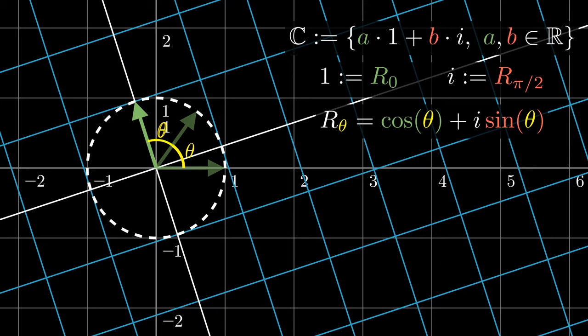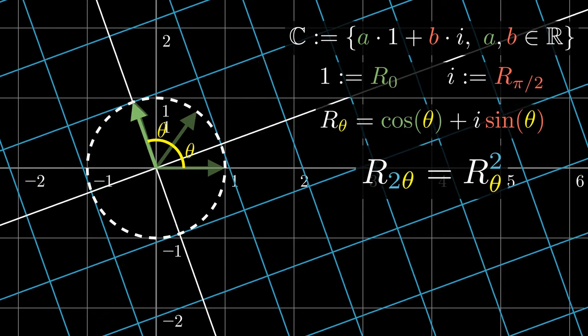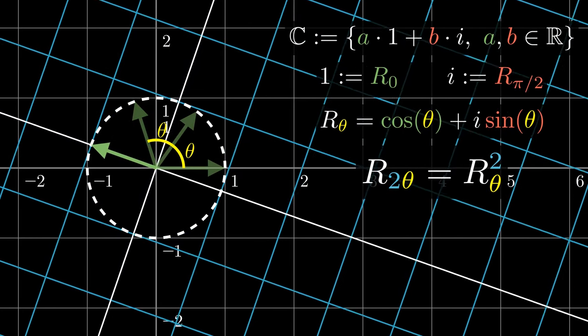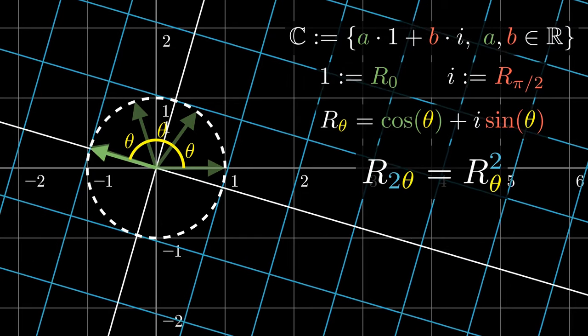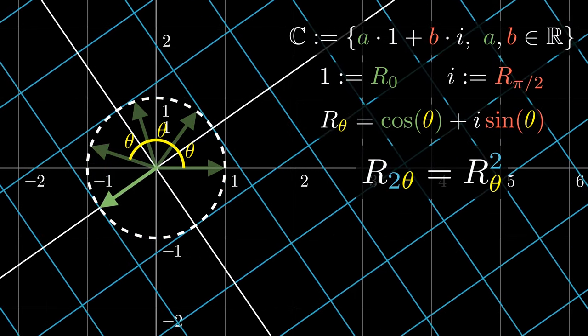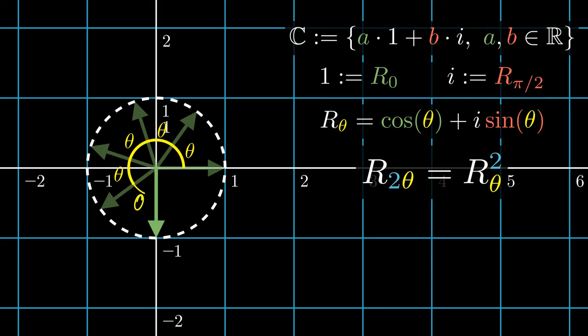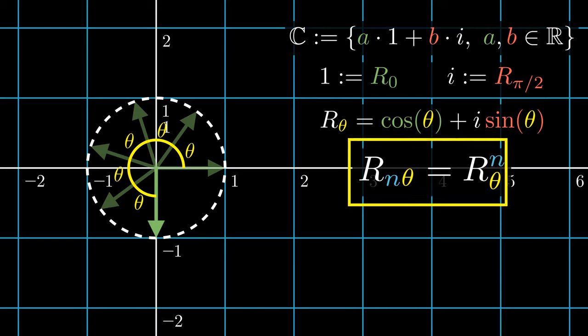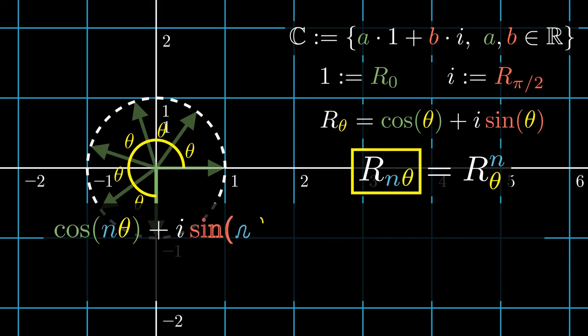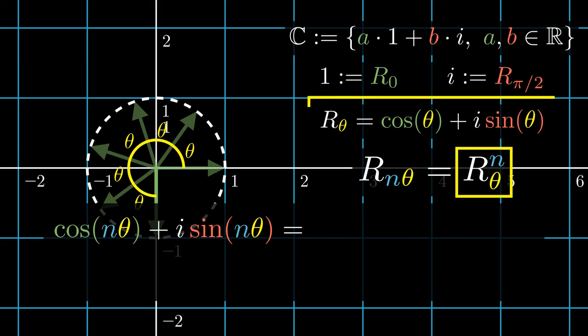But we could rotate a second time by the same amount. And this tells us that a rotation by 2 of theta is the same as the rotation by theta applied two times. We could apply for a third round, a fourth round, and a fifth round. And in general, we can apply this by n rounds. But a rotation by n theta means that we can substitute n theta into our formula.